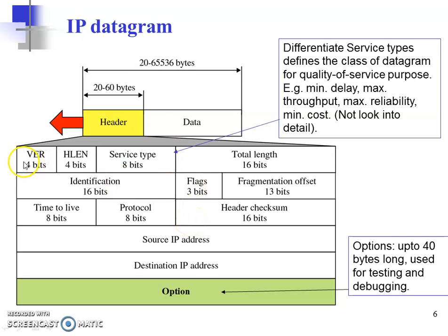The version field occupies 4 bits. Right now we are in version 4, so these 4 bits will be representing the number 4. If it were version 6, then the 4 bits would be represented as the binary version of number 6.